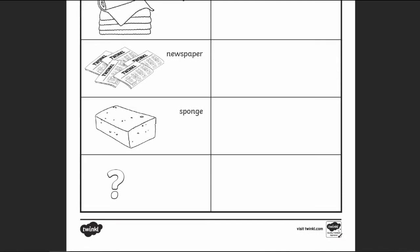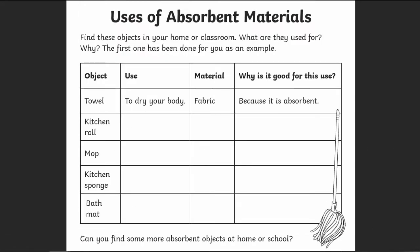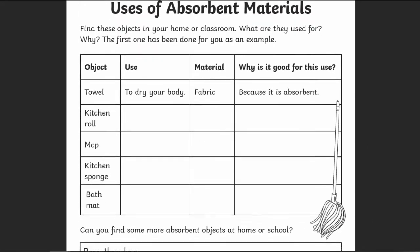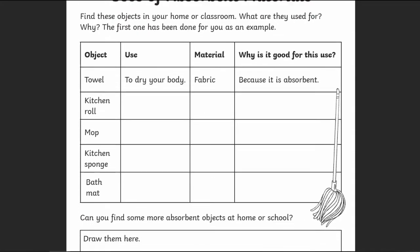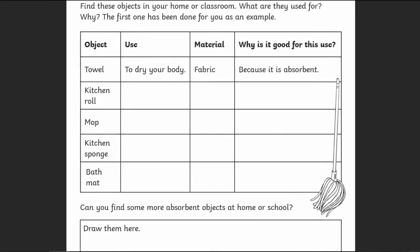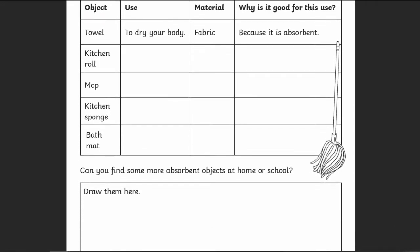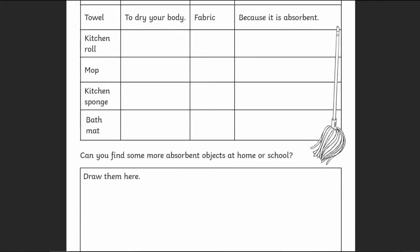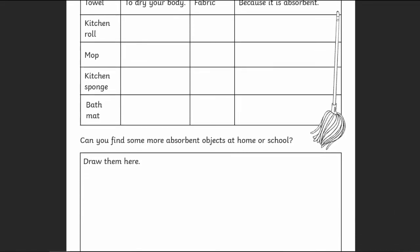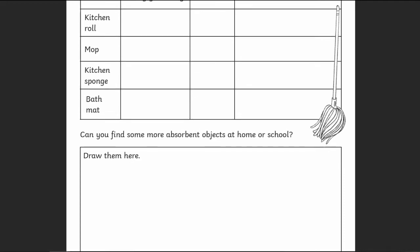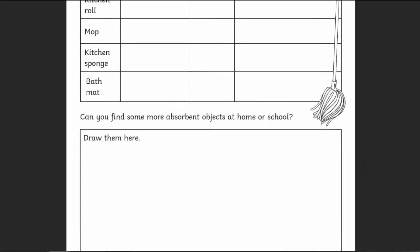There's even space for them to experiment with an object of their choice. Or, you can take it a step further by asking learners to think about what each item is used for and why absorbency — or a lack thereof — would work in their favour.